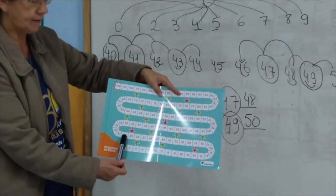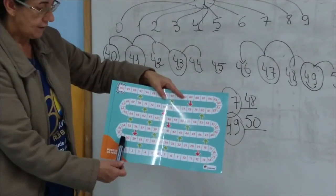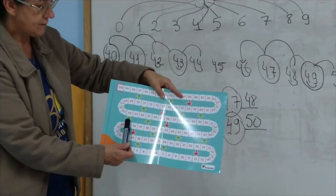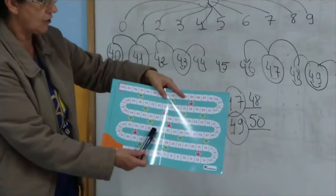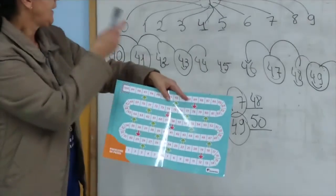Já é a família do 30: 30, 31, 32, 33, 34, 35, 36, 37, 38, 39, 40.